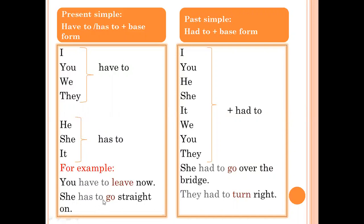In the past simple, have or has becomes had to plus the base form of the verb. So with all the subjects, we write had to in the past. With I, you, he, she, it, we, you, they, we write had to.